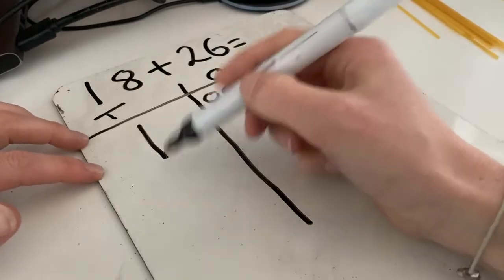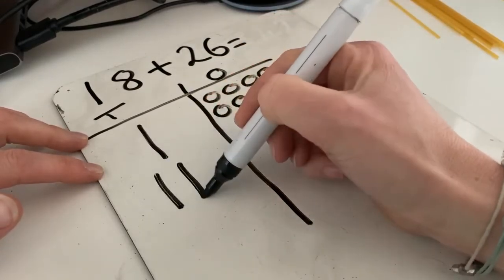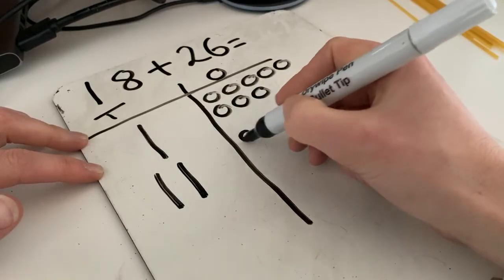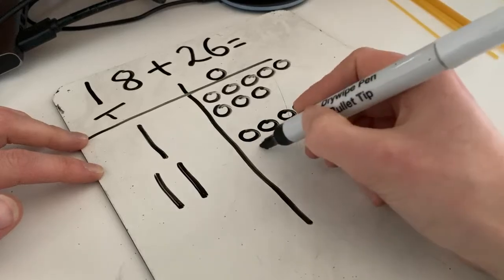Then we're going to draw in our next number. So how many tens have we got? That's right, two tens and six ones. One, two, three, four, five, six.